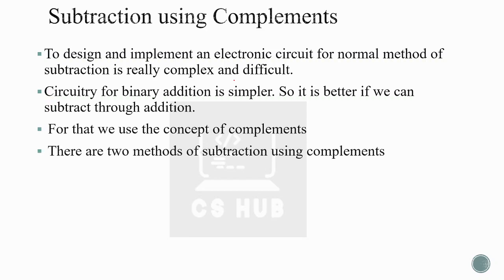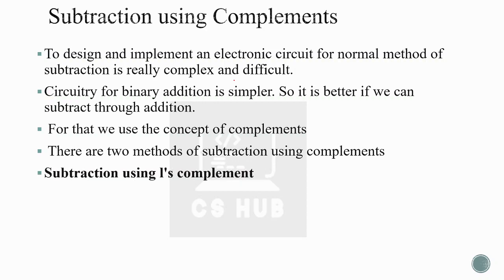There are two methods of subtraction using complements. If we subtract one number, we can instead add its complement, converting subtraction into addition. The first method is subtraction using one's complement; the second is subtraction using two's complement.